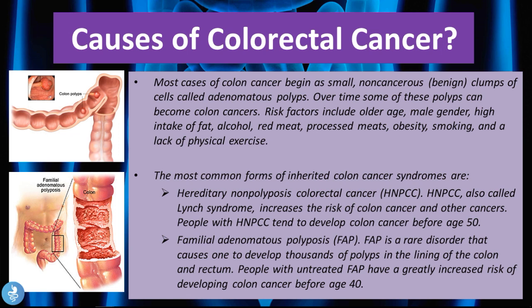There are also inherited forms of colon cancer. The most common genetically related syndromes are hereditary non-polyposis colorectal cancer (HNPCC), also called Lynch syndrome, which increases the risk of colon cancer and other cancers — people with HNPCC tend to develop colon cancer before age 50. Another syndrome is familial adenomatous polyposis (FAP), a rare disorder causing thousands of polyps in the colon and rectum; untreated FAP carries a greatly increased risk of colon cancer before age 40.